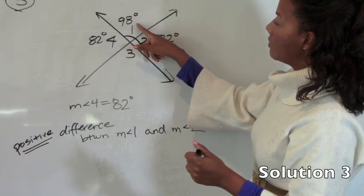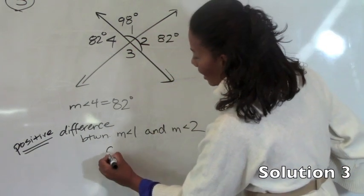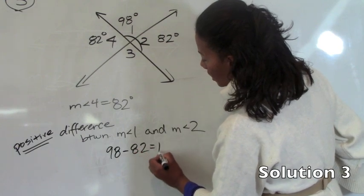So to find the positive difference, I have to subtract this from this. So it's simply 98 minus 82, which is 16 degrees.